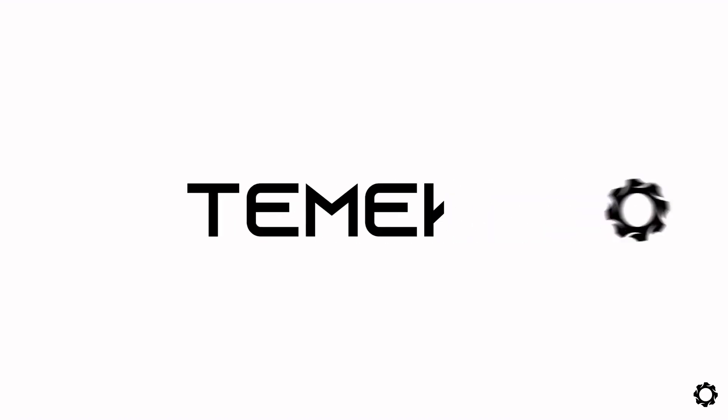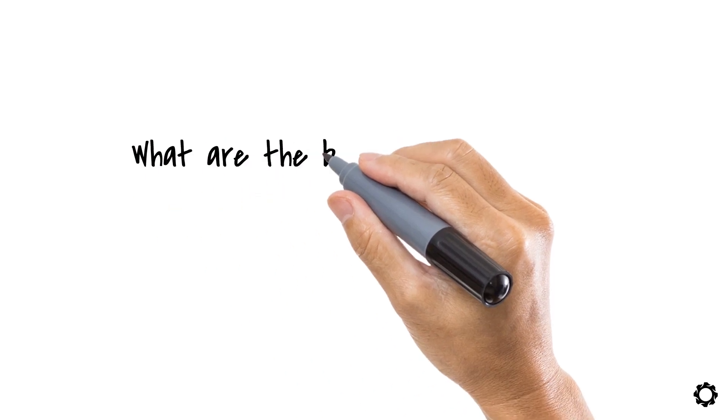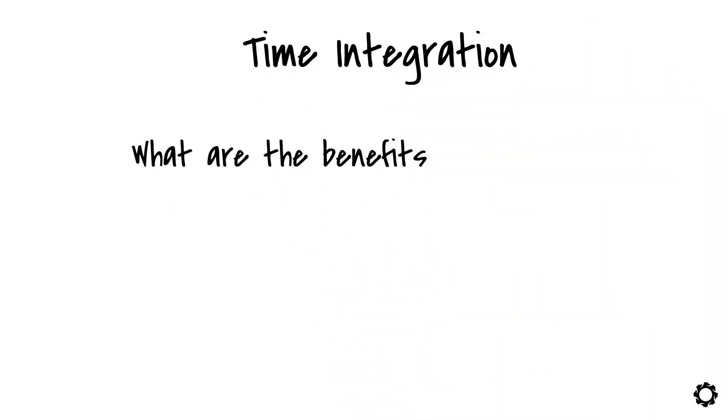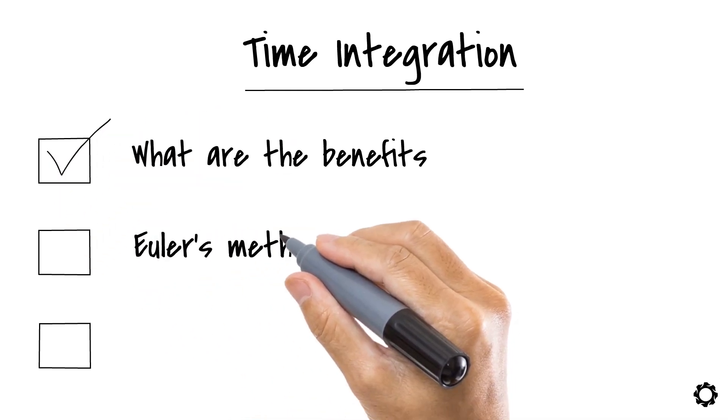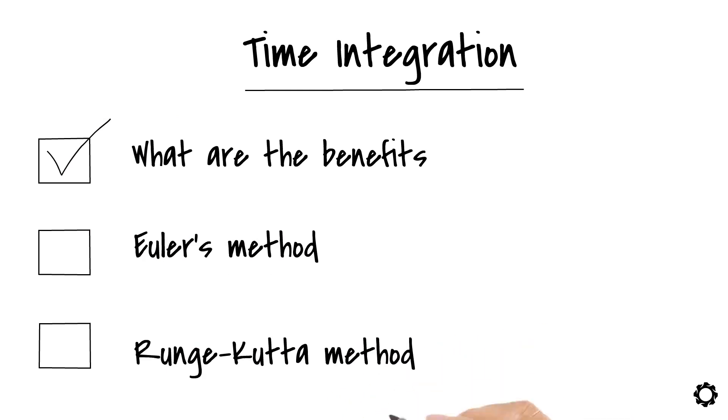Hi and welcome to Temeco. In this video, we are going to learn what are the benefits of applying numerical time integration to solve the equation of motion of dynamic systems. Also, we will familiarize ourselves with the two most typical methods which can be used for this purpose: Euler's method and Runge-Kutta method.